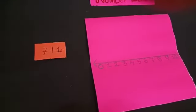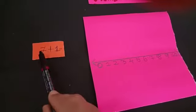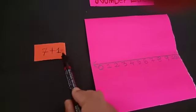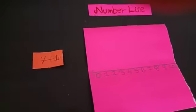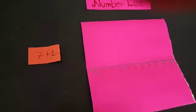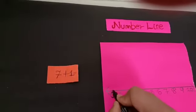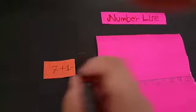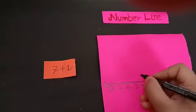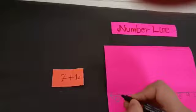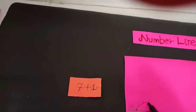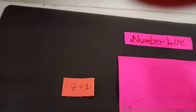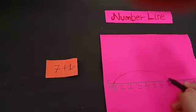Our second question is 7 plus 1. We will start with which number? We will start with 0. So from 0, first of all, our first number is 7. So we will jump directly up to 7.